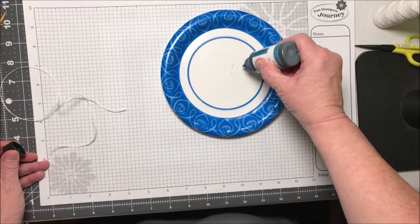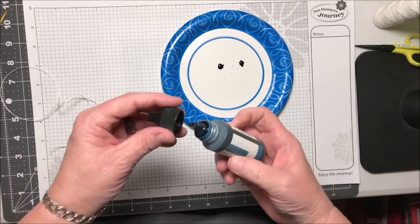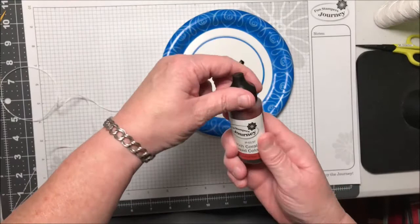This one is Catalina Splash. So I'm going to put some Catalina Splash on here. These are our liquid colors. Rich Coral. And I liked using more than one color.